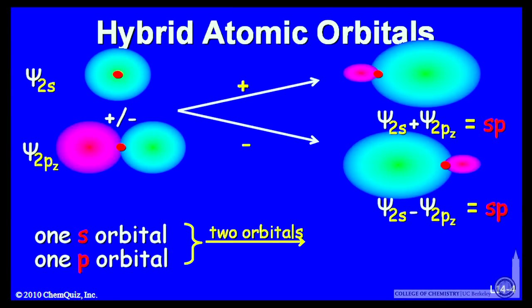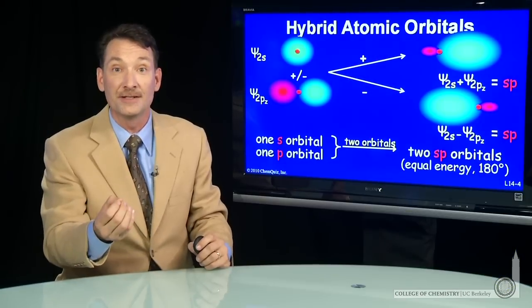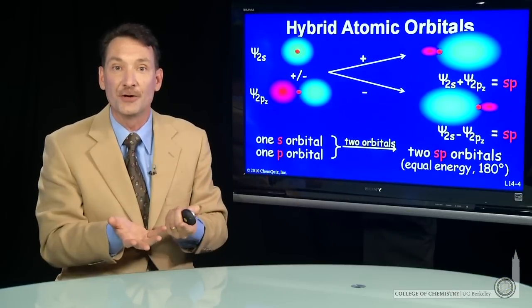So now I have two new atomic orbitals. Their designation is SP, because they came from an S and a P orbital, and they're 180 degrees from each other. Two SP orbitals, equal energy, 180 degrees from each other—perfectly appropriate for a 180-degree bond.